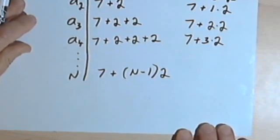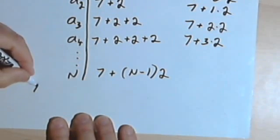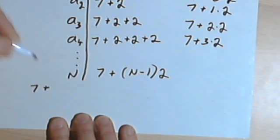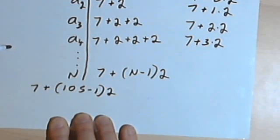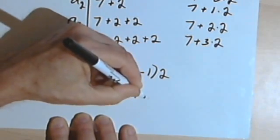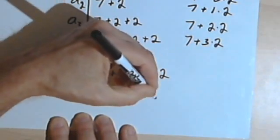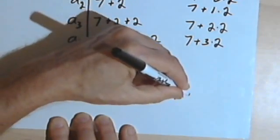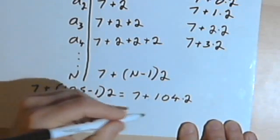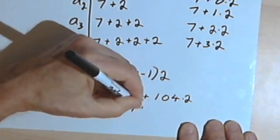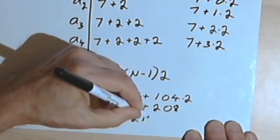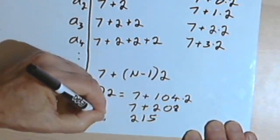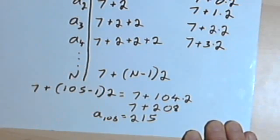So let's go back to that problem of what's term number 105. So I'm going to take 7 plus 105 minus 1 instead of n-1, 105 minus 1 times 2. And that's going to equal 7 plus 105 minus 1 is 104, so 104 times 2. Well, 2 times 104 is going to be 208. So that'll be 7 plus 208. And 7 plus 208 would be 215. So the 105th term, or I could call that a sub 105, would be 215.